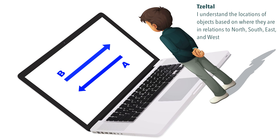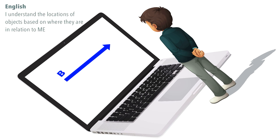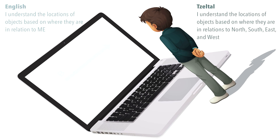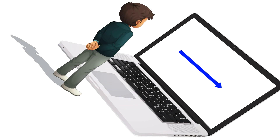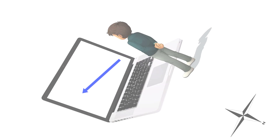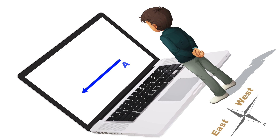As you may have guessed, CELTA speakers most often identified arrow A as the arrow they had seen, while English speakers identified arrow B. The CELTA language only has expressions for identifying locations in terms of fixed points of reference. When they see the original arrow, they see it as pointing from west to east. When rotated, they look for the arrow still pointing from west to east, which is arrow A.